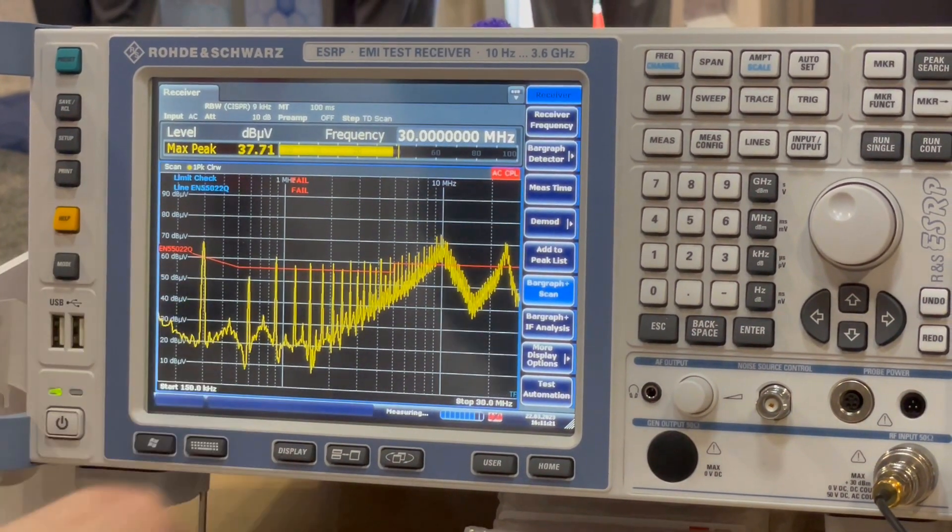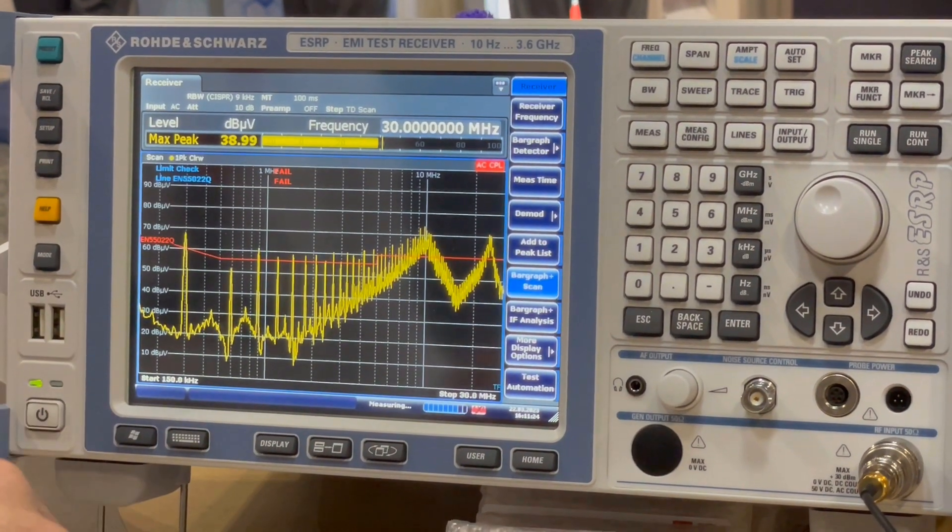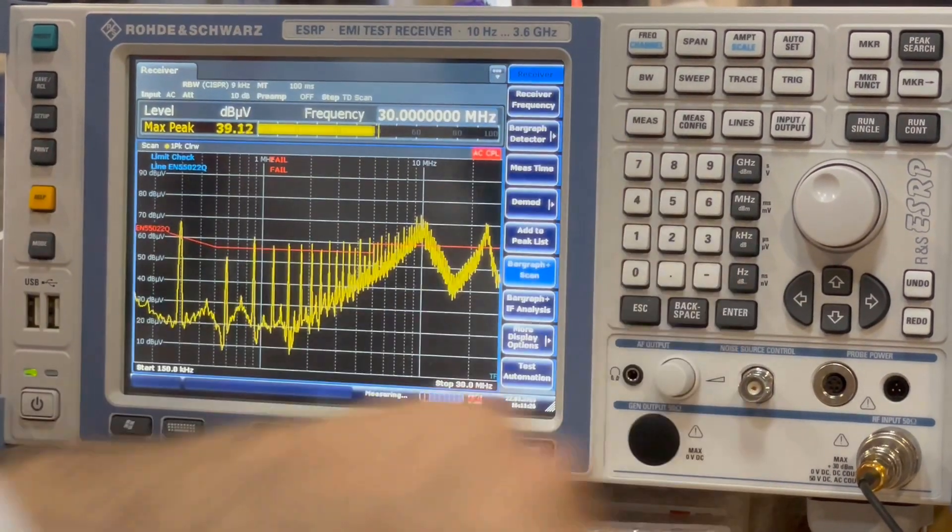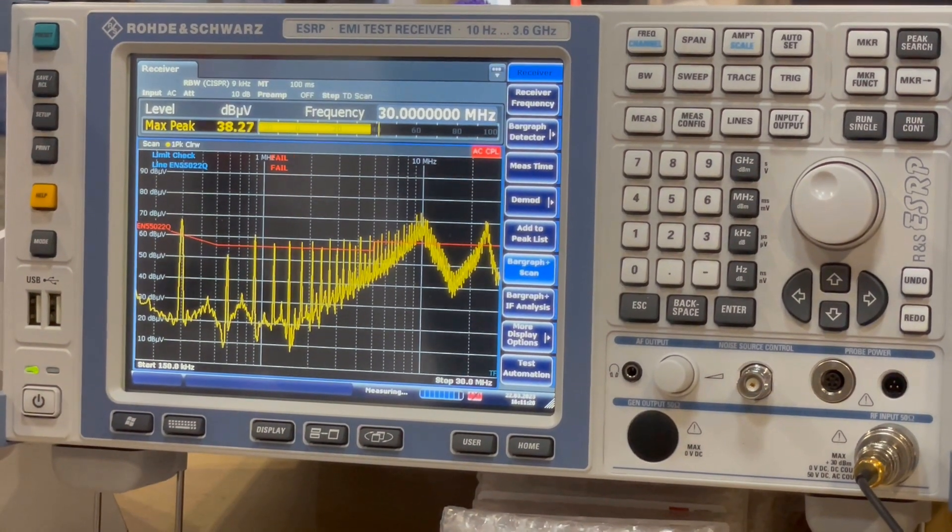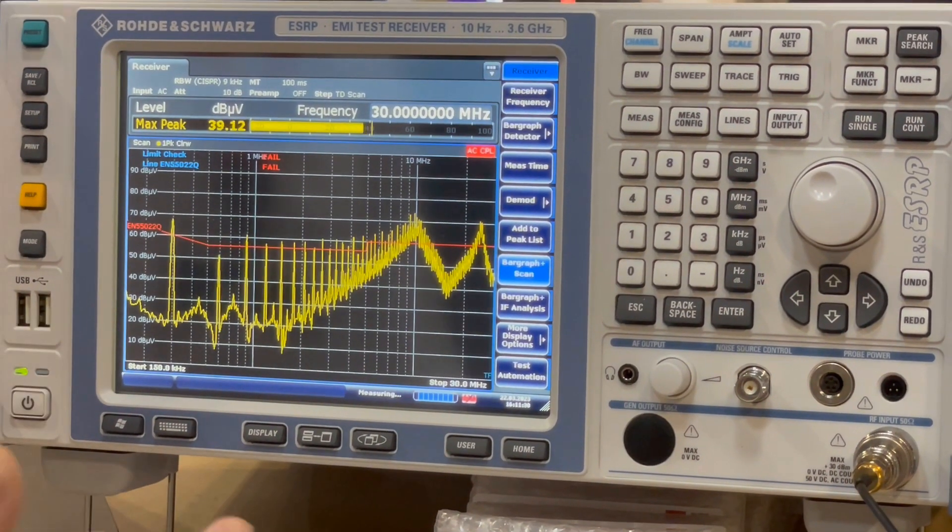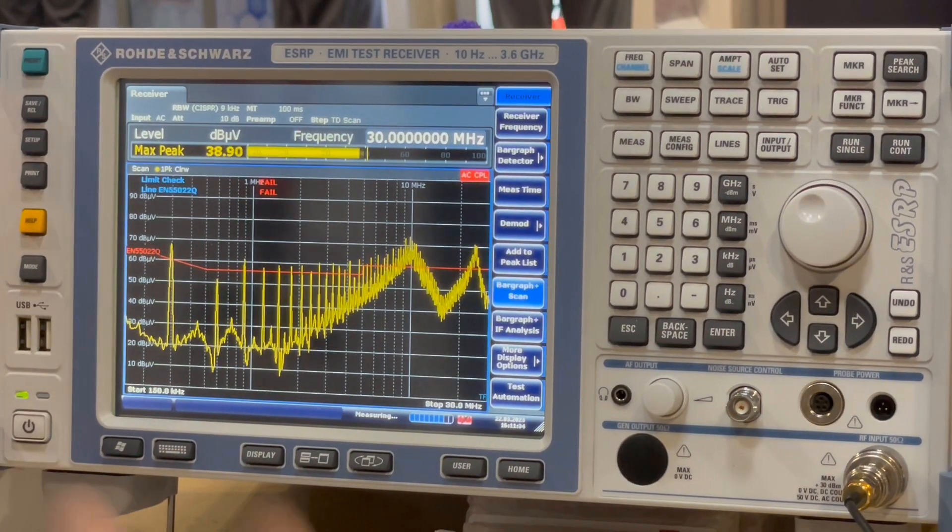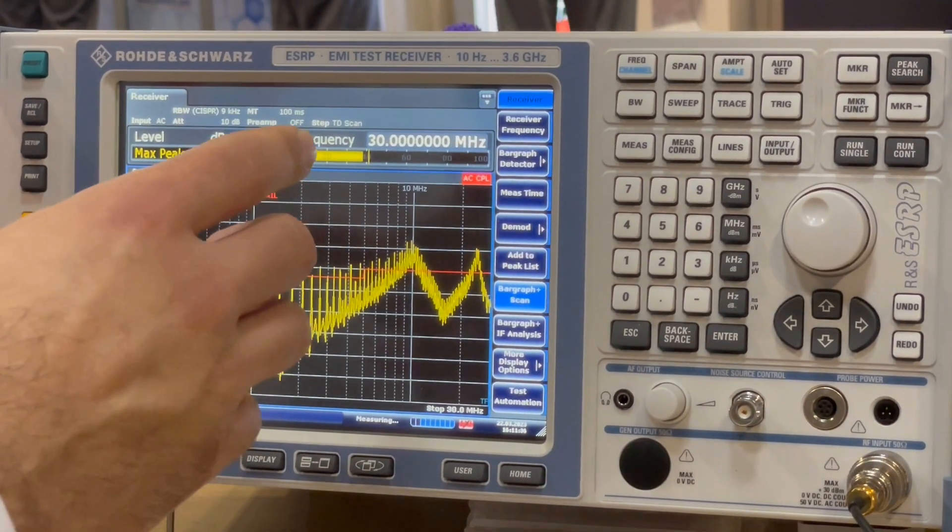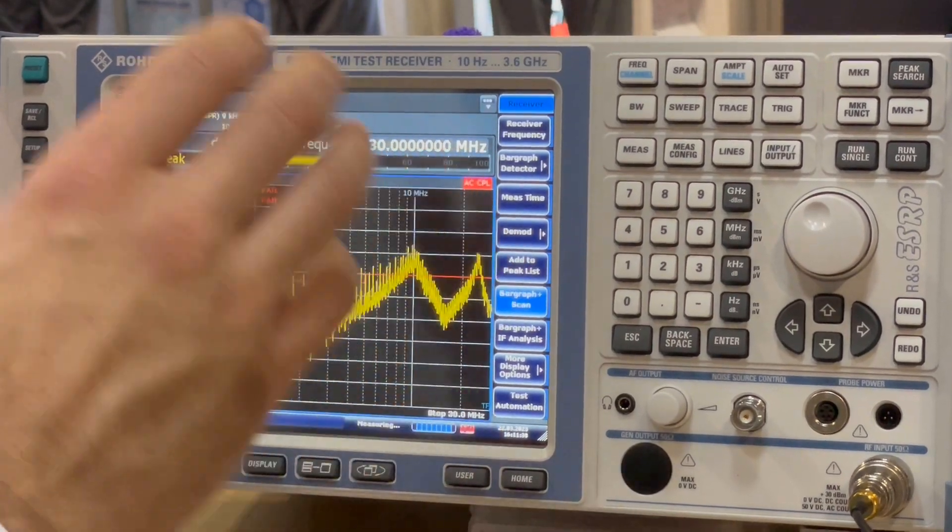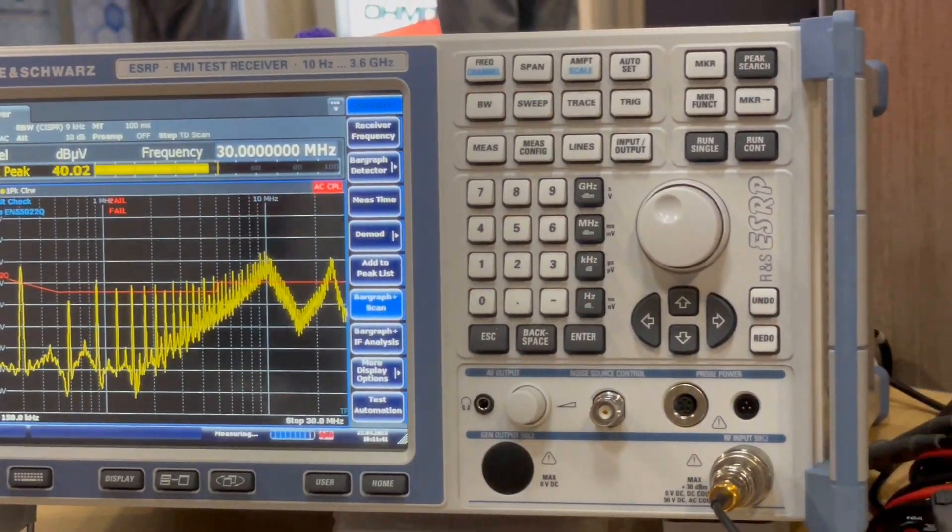That differential current can actually cause common mode current based on parasitic elements on your board, like the board layout and your heat sink. So this is our baseline, so let's look at finding a solution for this.